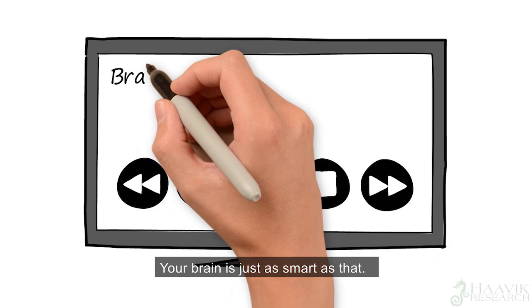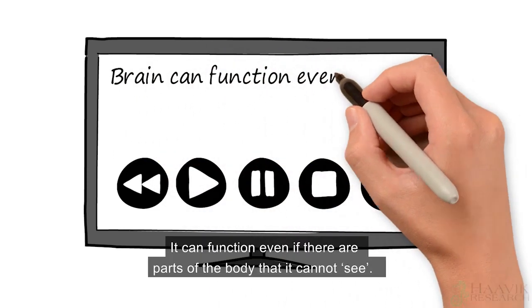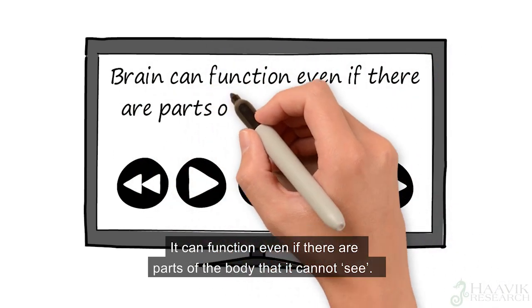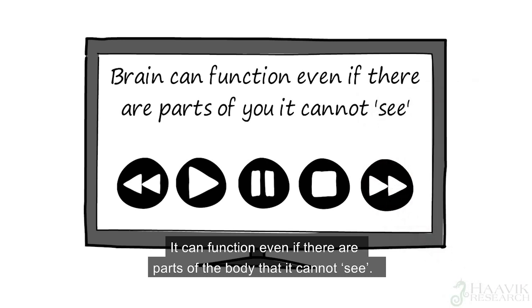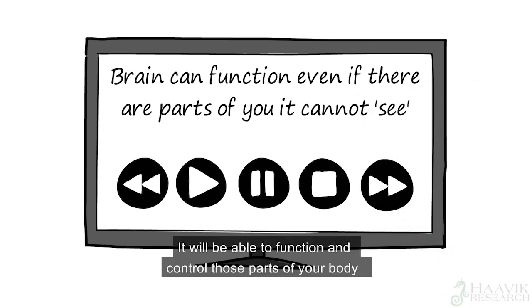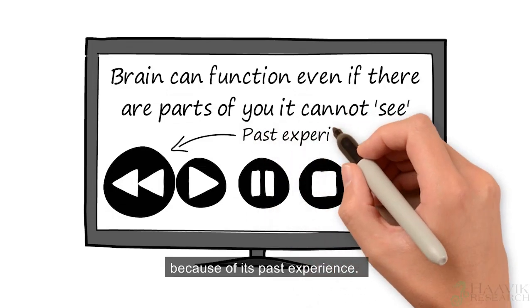Your brain is just as smart as that. It can function even if there's parts of the body that it cannot see. It will be able to function and control those parts of your body because of its past experience.